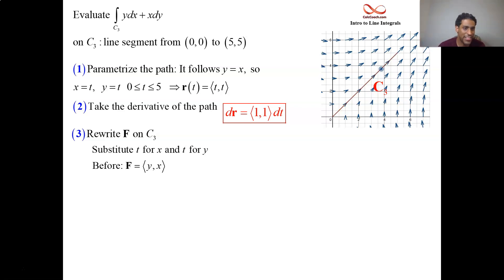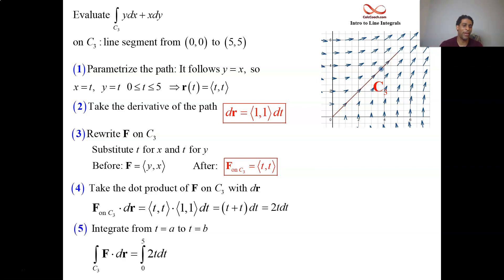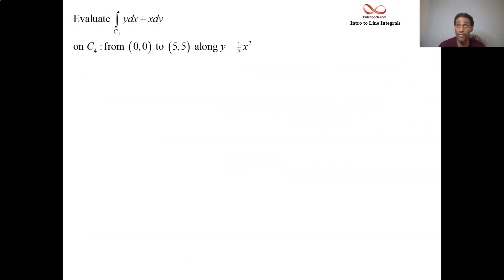If there was a third component, it would be whoever's times dz. We replace our y's with t. We replace our x's with t. And we dot these in step four. We get t plus t. We get 2t dt. That's what we integrate from 0 to 5. Well, the antiderivative of 2t is t squared. So we get the same 25. So c1 together with c2 gave you 25. C3, straight line path, gives you 25.